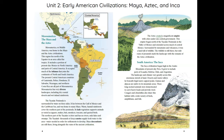The Aztec created a magnificent empire with cities under one central government. This empire began north of the Yucatán Peninsula in the Valley of Mexico and extended across much of central Mexico. Surrounded by mountains and volcanoes, it was a land full of wildlife. The wildlife is still there, but only ruins of pyramids mark the landscape with the remains of the Aztec civilization.